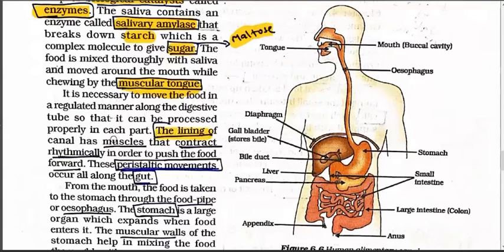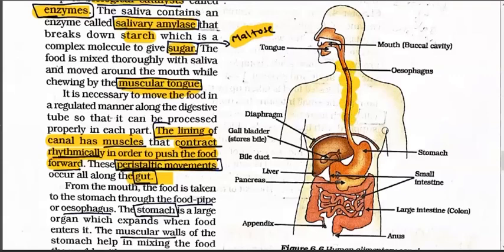It is necessary to move the food regularly along the digestive tube so that it can be processed properly in each part. The lining of the canal has muscles that contract rhythmically to push food forward. This is called peristaltic movement, which occurs along the gut. As soon as we swallow food, the muscles in the food pipe create peristaltic movement. Even if you eat lying down, the food will still go down to your stomach - it goes straight to the stomach through this peristaltic movement.